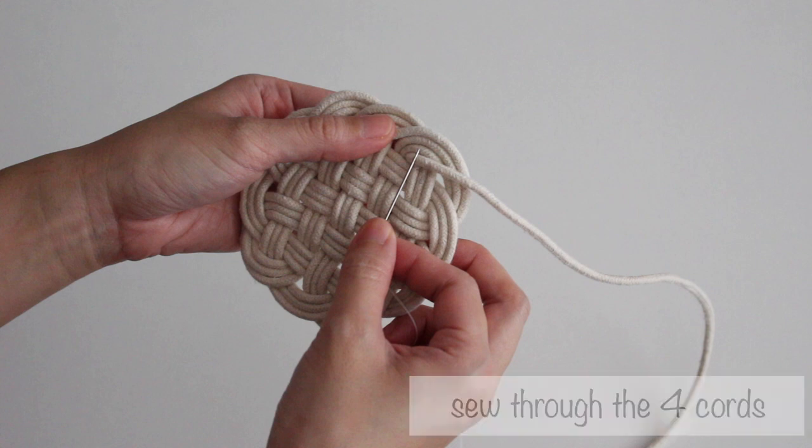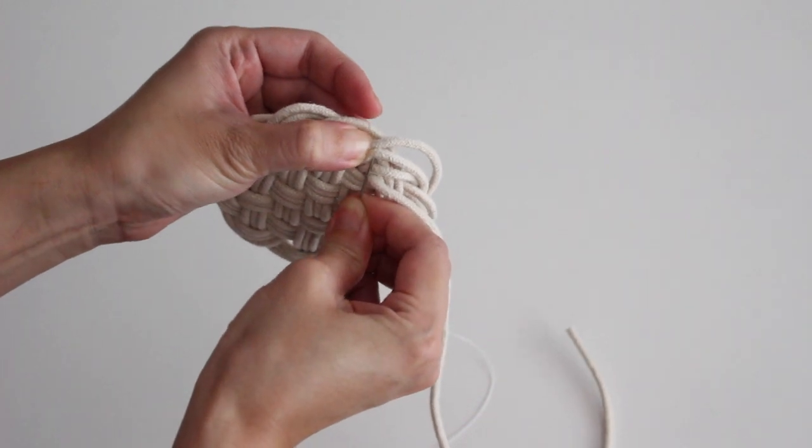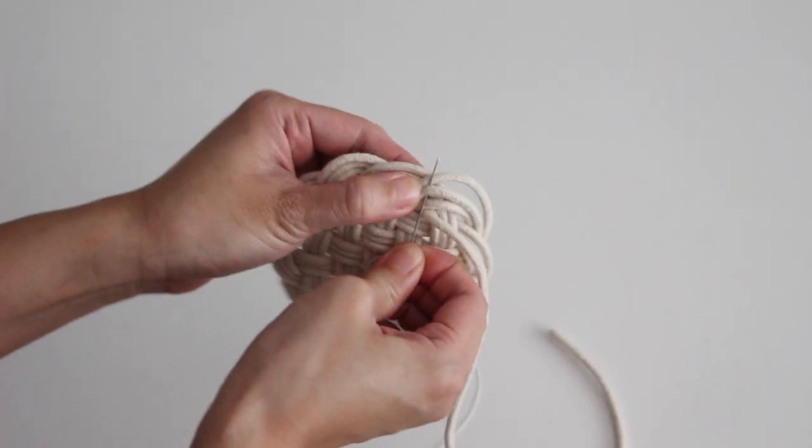With a needle and thread, sew through the 4 cords. I started from the 2nd cord so that the ending knot wouldn't show.